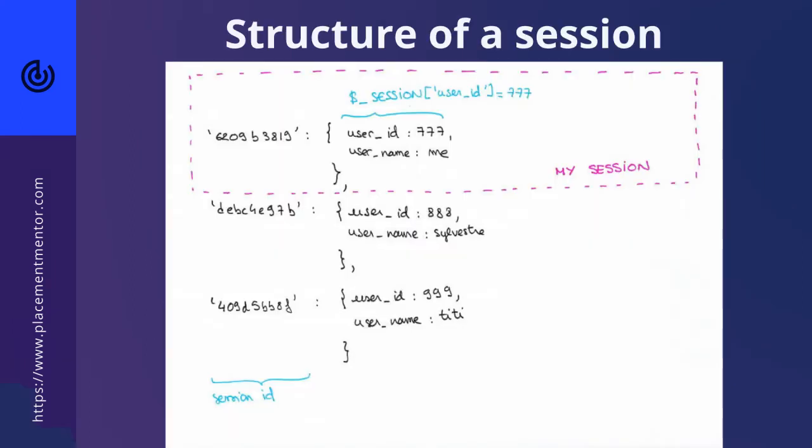The second thing to understand is the structure of a session. The session has a key value pair data structure. Think of it as a hash table where each user gets a hash key to put their data in. This hash key would be the session id. A session data structure would look like this.